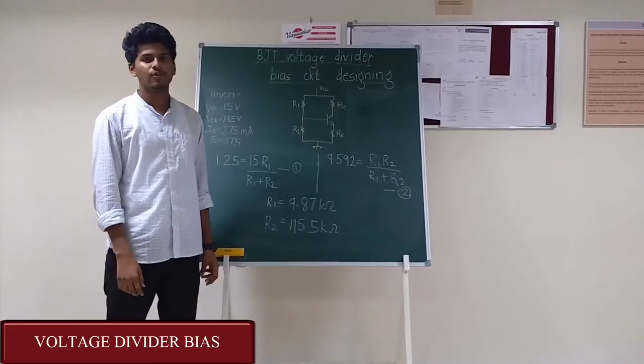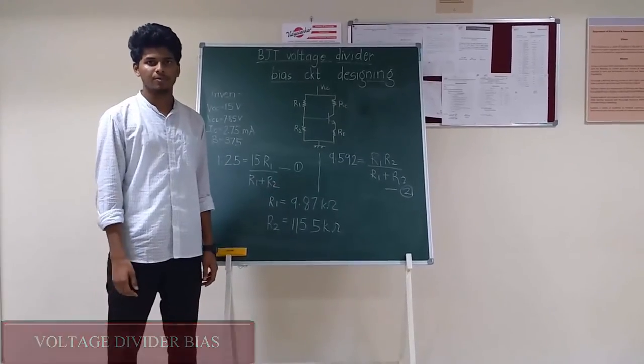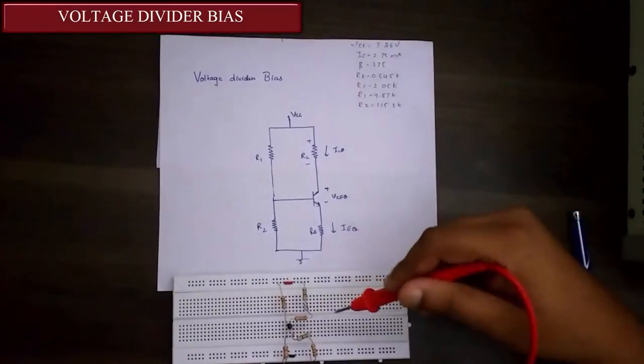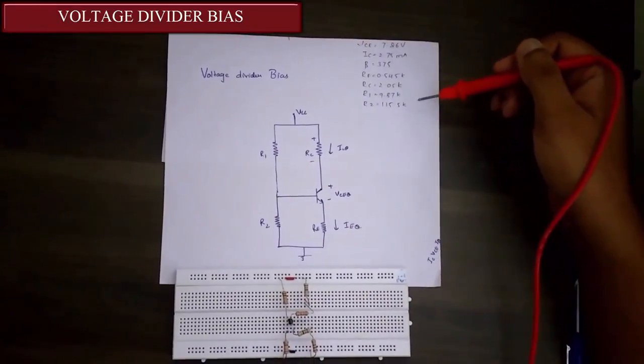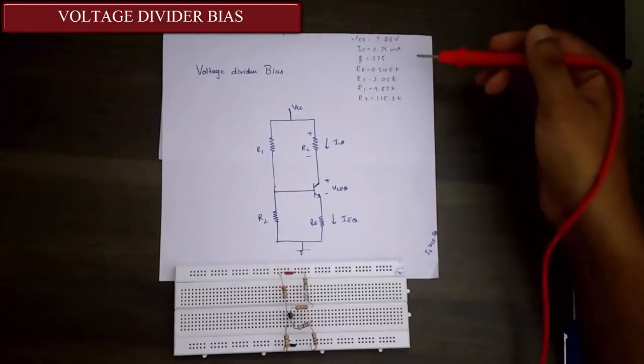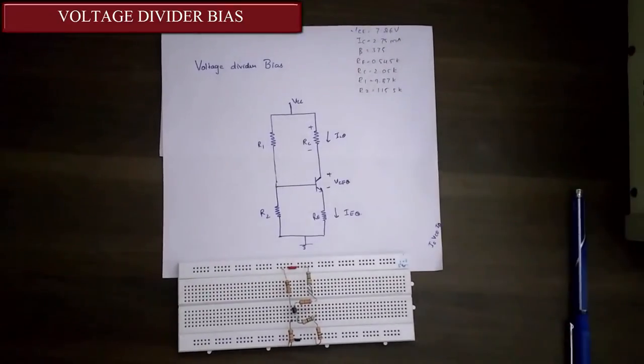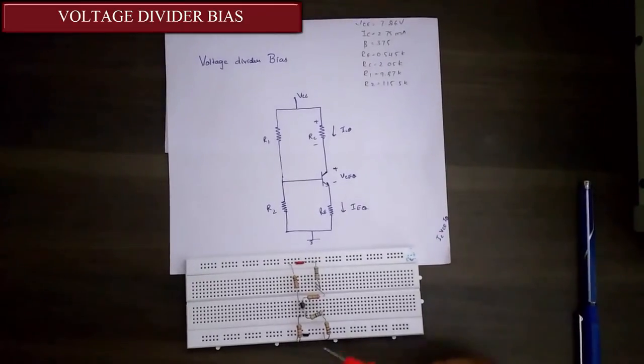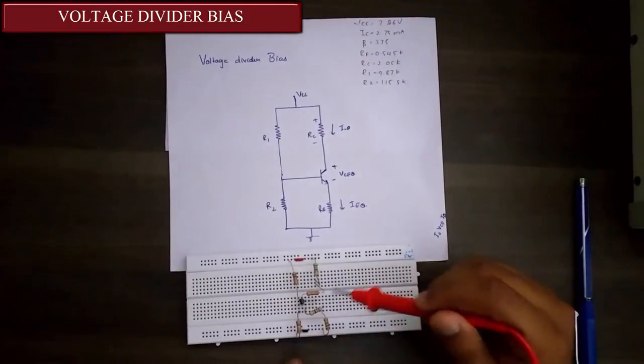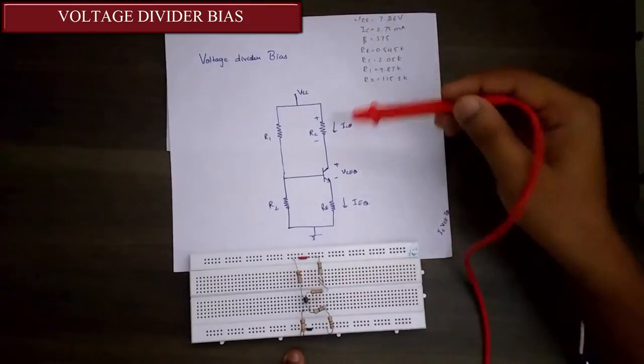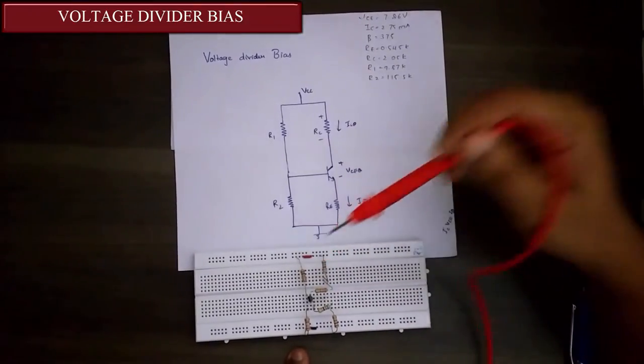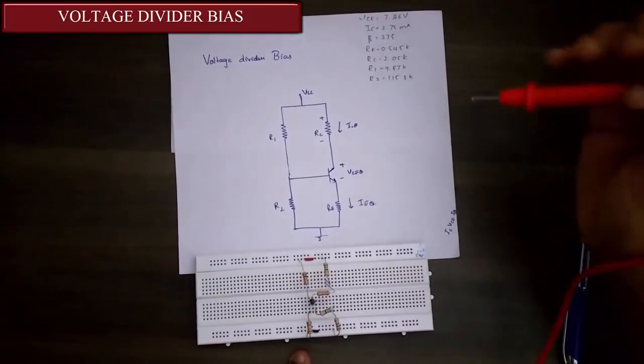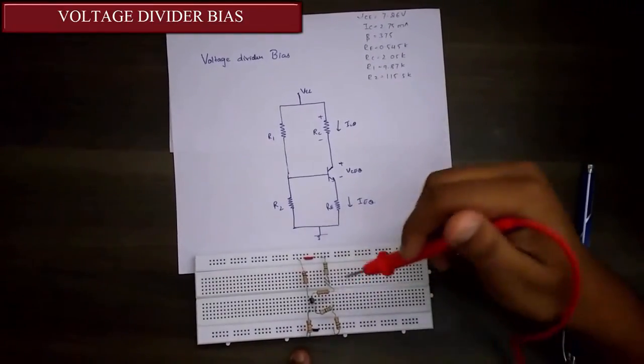Now let us look at the implementation of voltage divider bias circuit on the breadboard. So as you can see, this is how the circuit is implemented on breadboard. These are the values which we got by the calculation. As you can see, the emitter is grounded through this RE resistance. This is the RC which is connected to VCC, and R1 and R2 are here. Since we were not having the exact value, we have applied two different resistors.